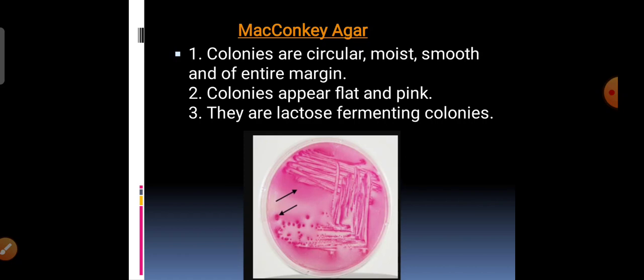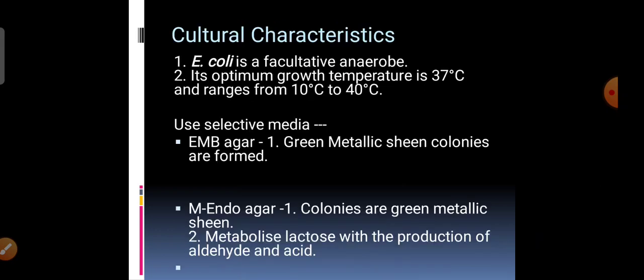E. coli produces pink colored colonies on MacConkey's agar because sugar lactose is present in the medium. When the organism is inoculated, it utilizes and ferments the lactose, producing acid. With acid production, the pH of the medium drops down, causing the neutral red indicator present in MacConkey's agar to release its color, making the colonies appear pink.